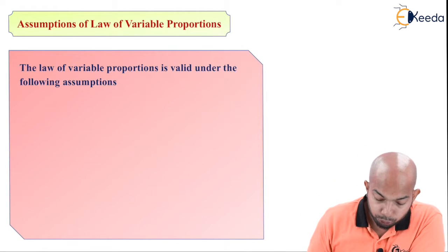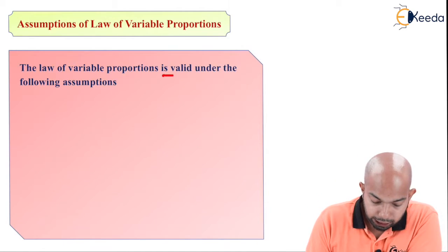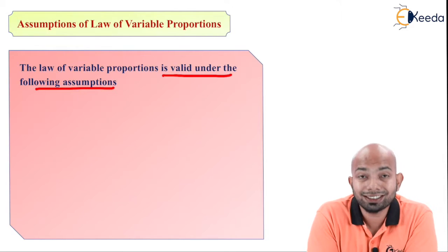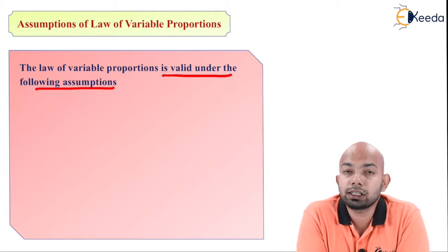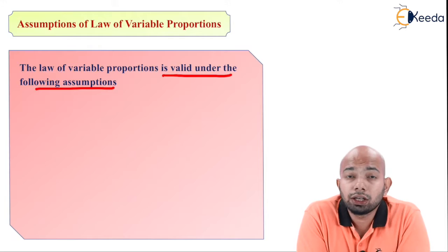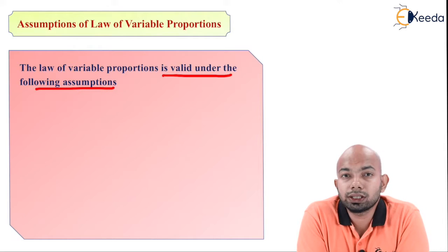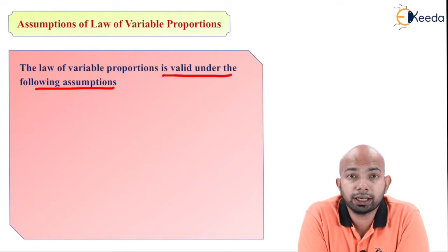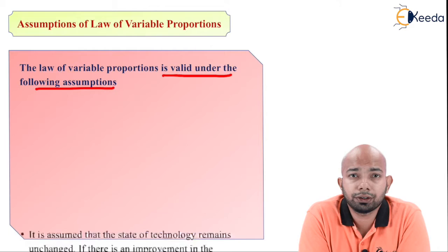The law of variable proportion is valid under the following assumptions. As stated, the law is valid only when these assumptions hold. If these assumptions are not there, you cannot call the law of variable proportion to be valid. So what exactly is required to make this law valid is something that we will be understanding right now.